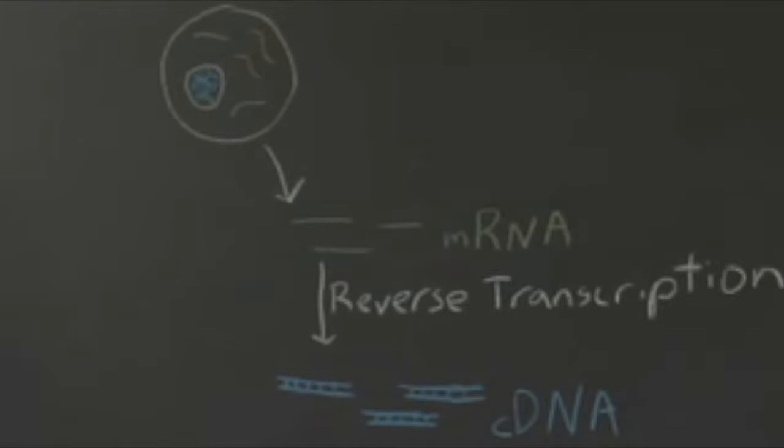Several factors determine the type of expression system used to produce protein, and the process of expressing proteins requires several steps. We'll go through one simple and classic example: insulin.